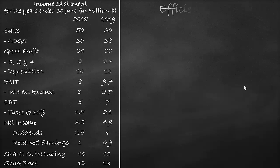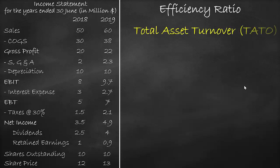An example of the efficiency ratio is the total asset turnover ratio. The total asset turnover ratio formula is sales divided by assets.